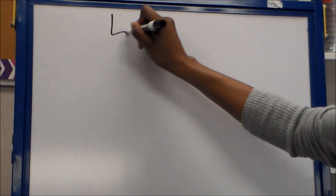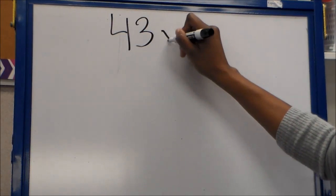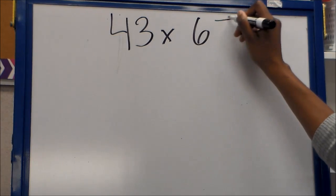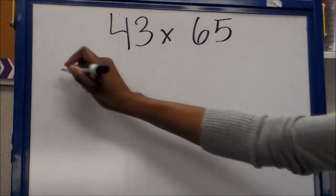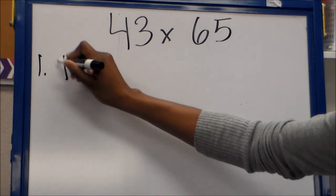So we're going to go over four different ways to multiply. We're going to multiply with these numbers, 43 times 65. The first way is the traditional way.